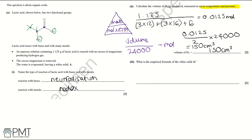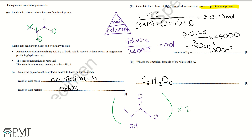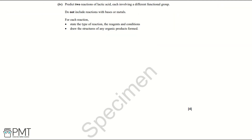Part three: what is the empirical formula of the white solid? When lactic acid reacts with magnesium, it loses a hydrogen from the carboxylic acid group, giving it a negative one charge. Magnesium has a 2+ charge, so two lactic acid groups are needed. The empirical formula of the white solid is C₆H₁₂O₆Mg. To get the mark you must have the correct empirical formula.